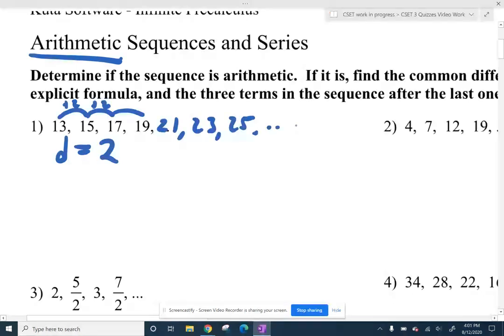If they want the 52nd term, that's pretty nice. We can get our 52nd term - so we call it a sub 52, is the 52nd term - by starting off with our first term and adding our common difference 51 times.